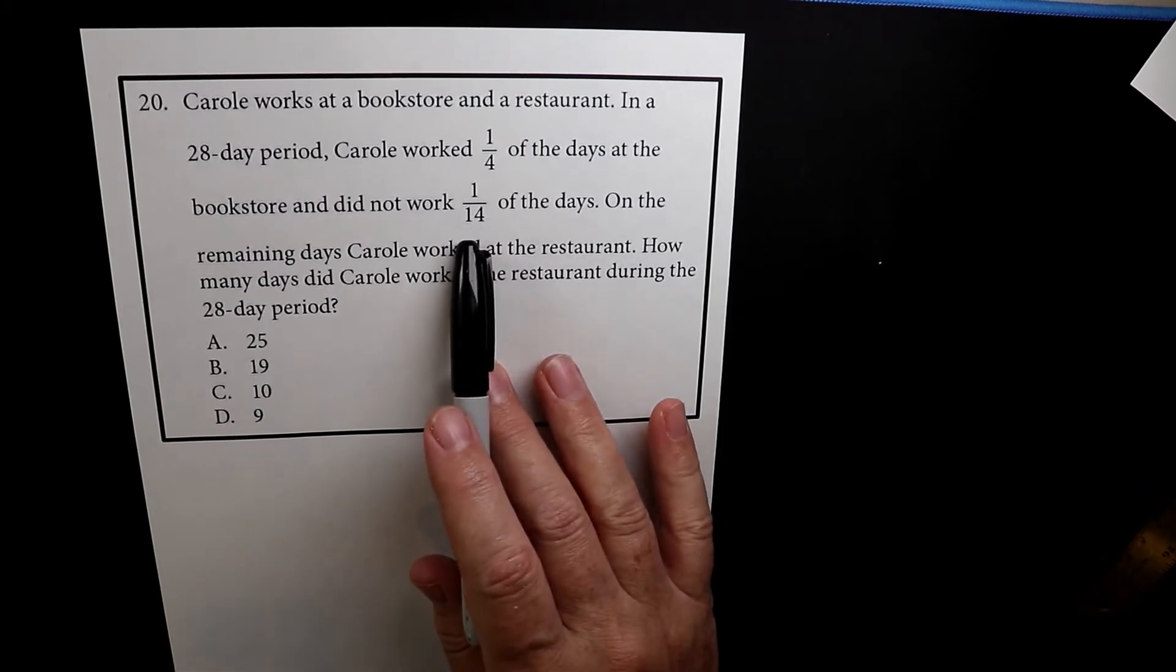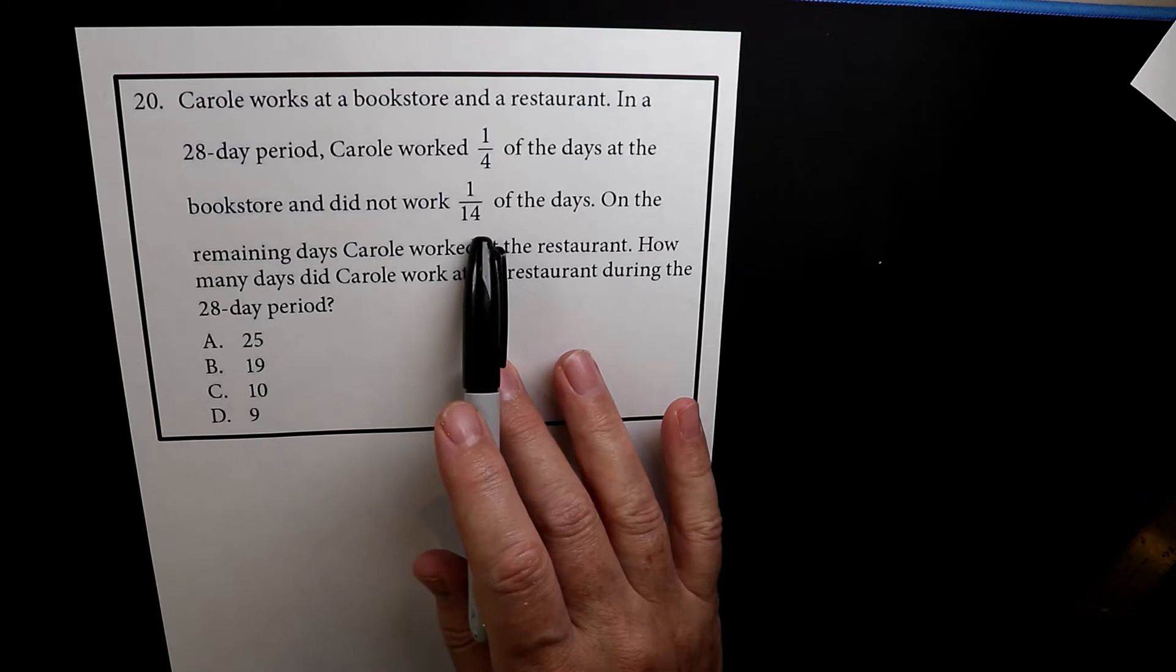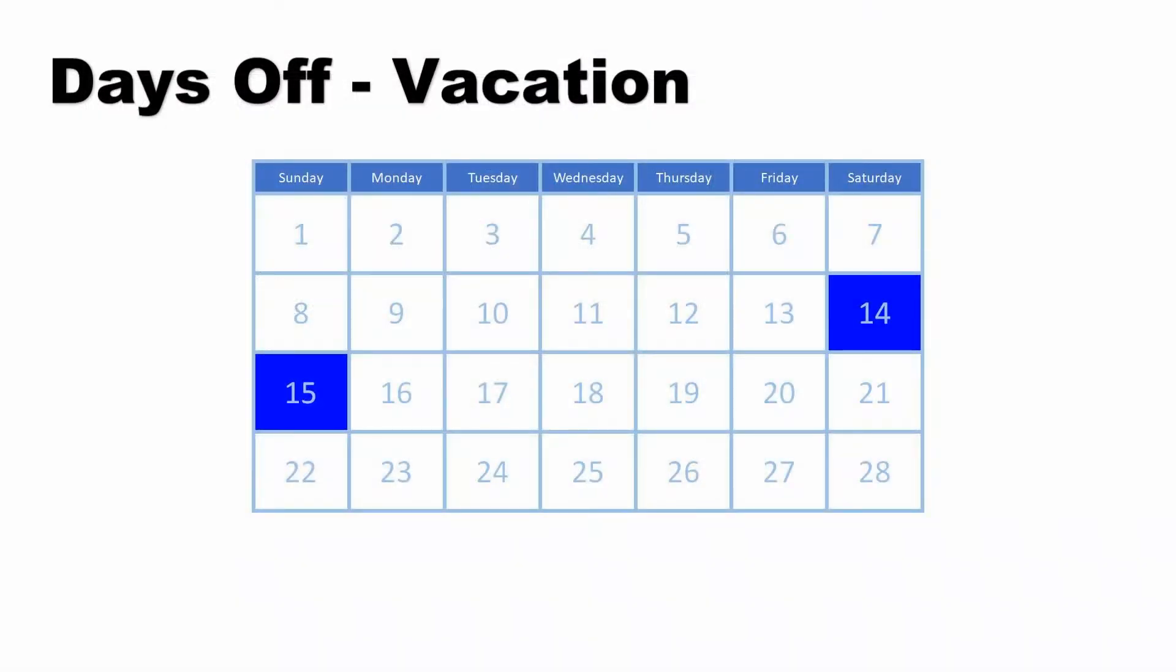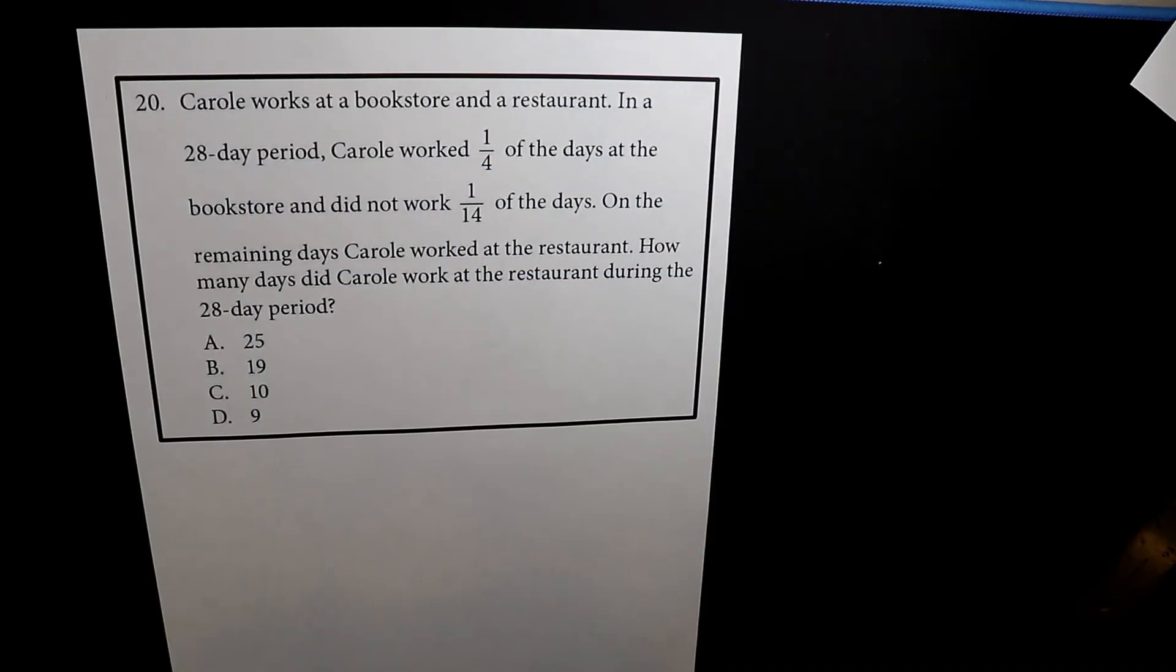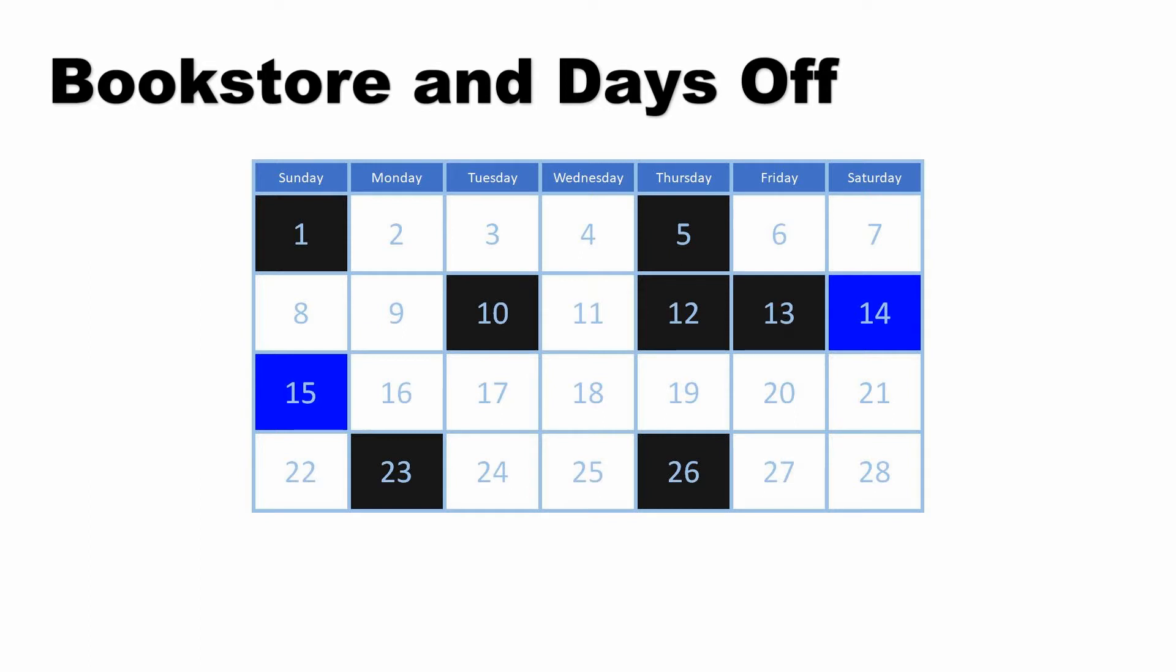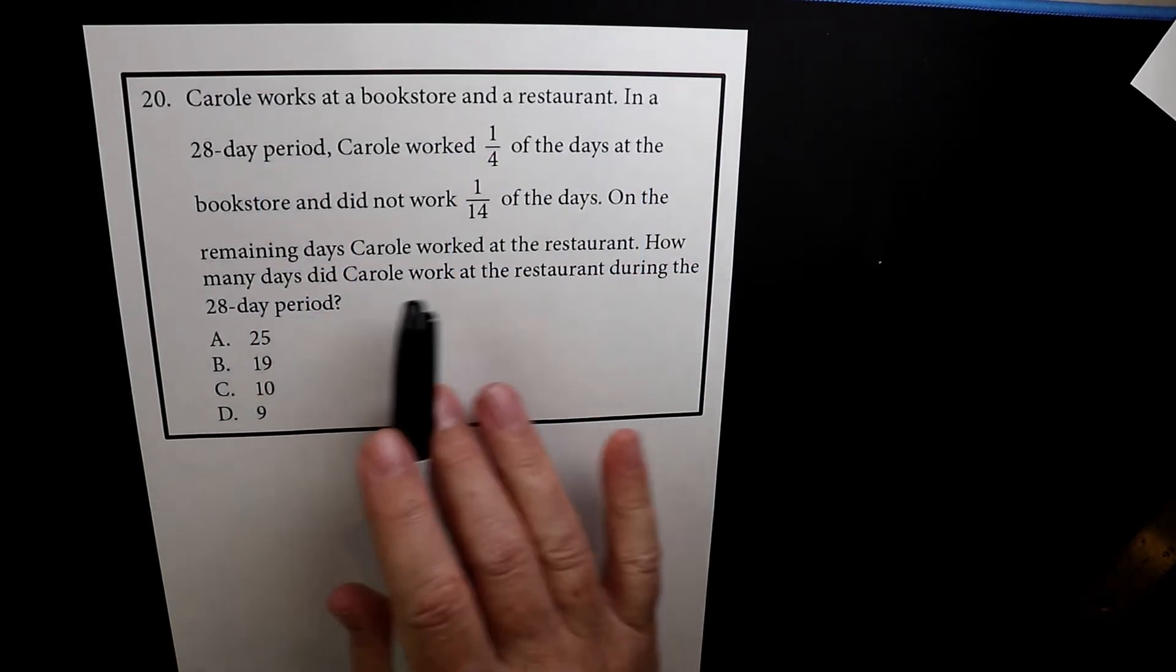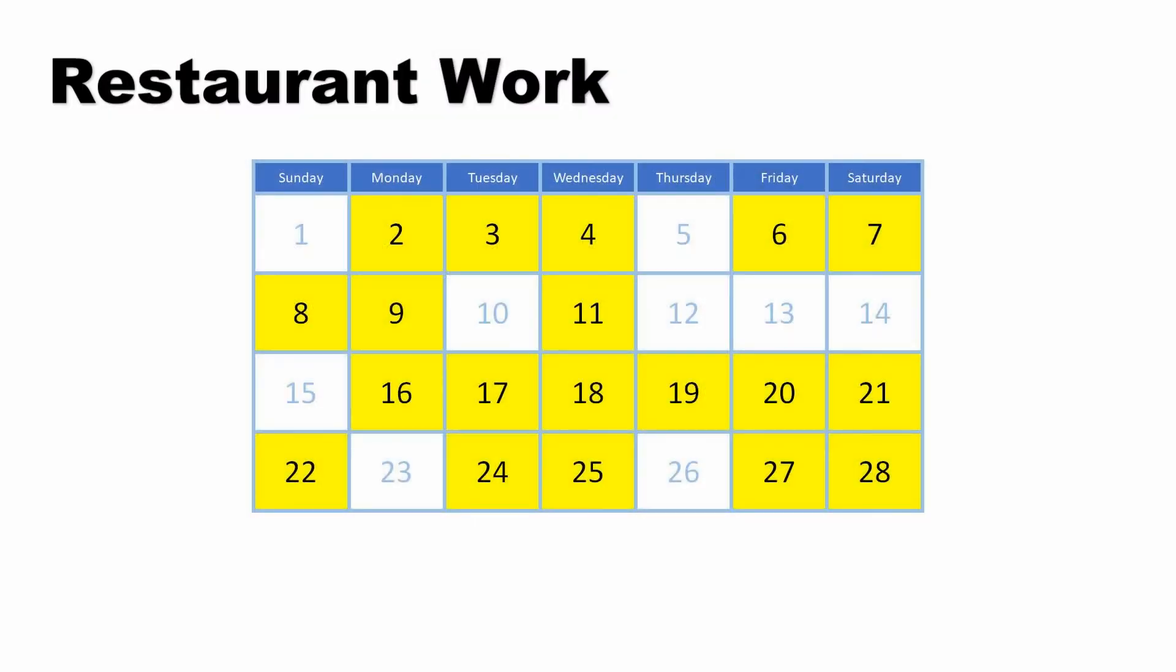So one-fourteenth of the time she had off. She had some time off, so that's this amount of time. This is her work time at the bookstore, and this is her time off where she kicked back. On the remaining days, Carol worked at the restaurant, so that's all this yellow time.